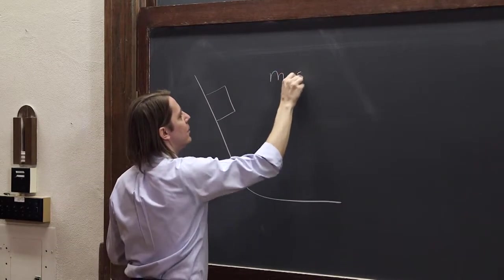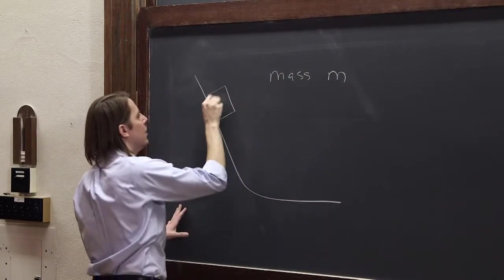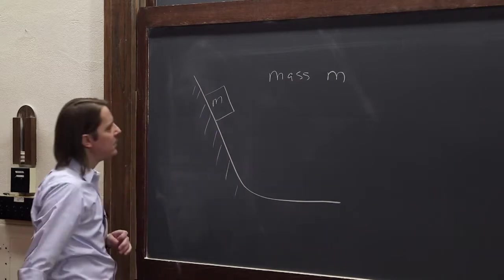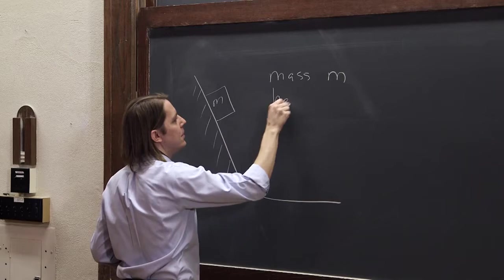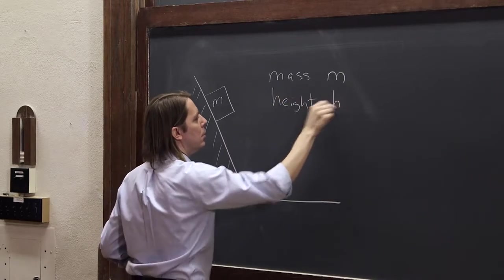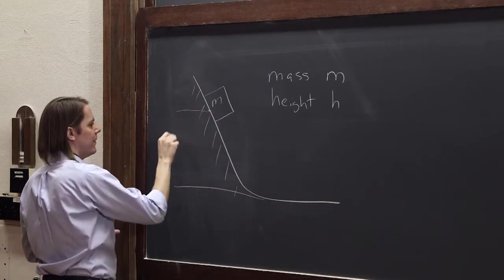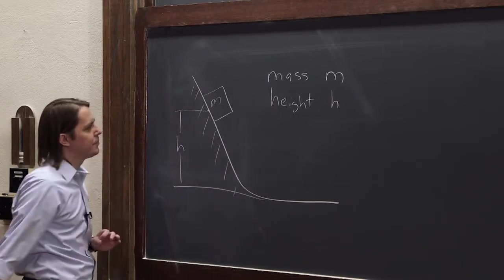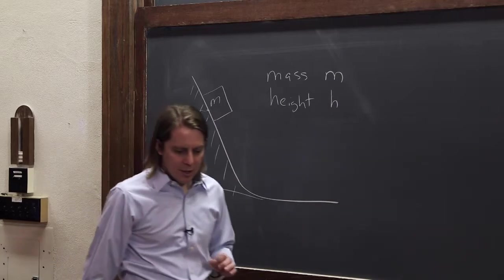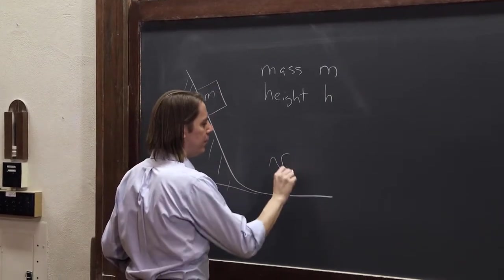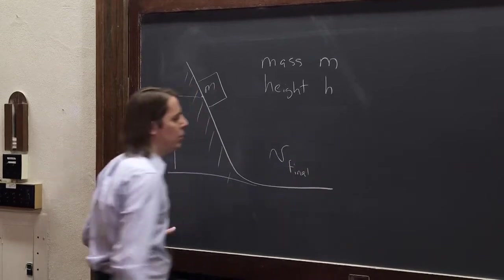And we have a mass on the ramp. So we have mass m on this frictionless ramp. It sits at height h. So if we say it's sitting about right here, and if we compare that to the ground, that's about h. And the question is, how fast is it going when it gets to the bottom? What is v final?